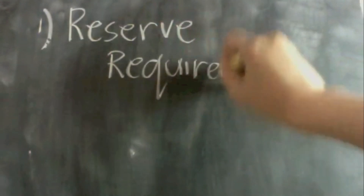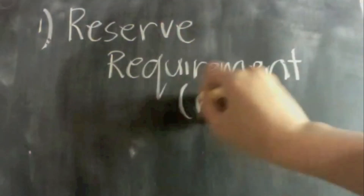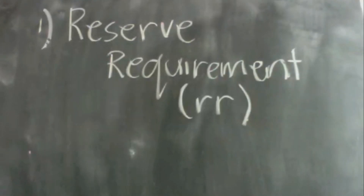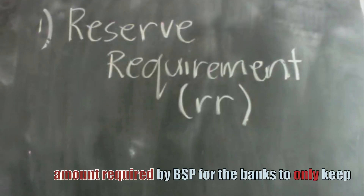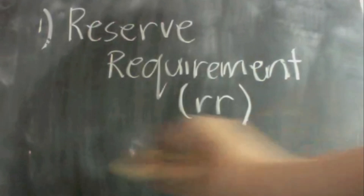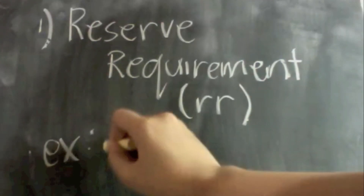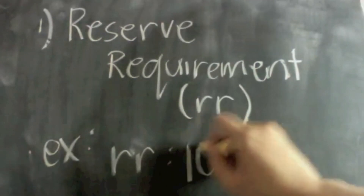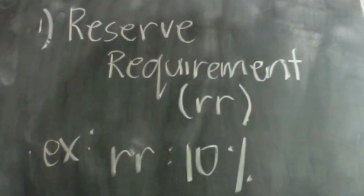The first monetary tool that the BSP uses is the Reserve Requirement, or RR. The Reserve Requirement is the amount required by the BSP for the banks to keep. It usually comes in percentage. For example, your Reserve Requirement is 10%.